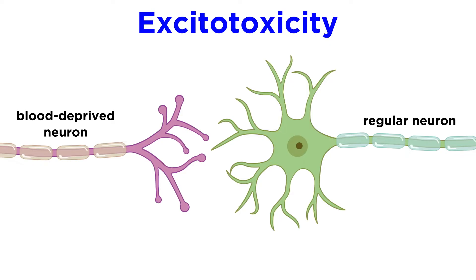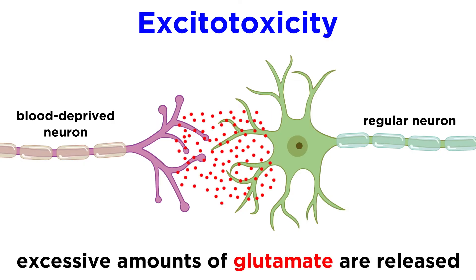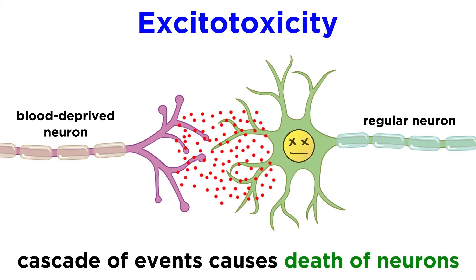When neurons are deprived of blood, they release excessive amounts of glutamate, which will over-activate receptors in postsynaptic neurons. This will cascade and can also trigger events that kill neurons, which is a process called excitotoxicity.